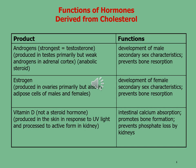The third hormone is vitamin D — not strictly a steroid hormone — produced in the skin in response to UV light and processed to its active form in the kidney. It is used in intestinal calcium absorption, promotes bone formation, and prevents phosphate loss by the kidneys.